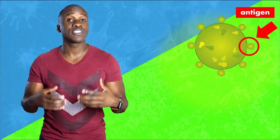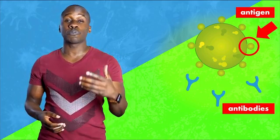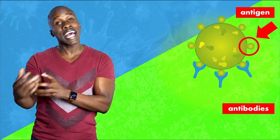All right, let's start at the beginning. A pathogen gets into your system. The pathogen has antigens on its surface that's recognized by an antibody. The antibody binds to the antigen.